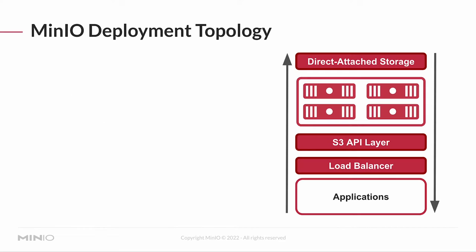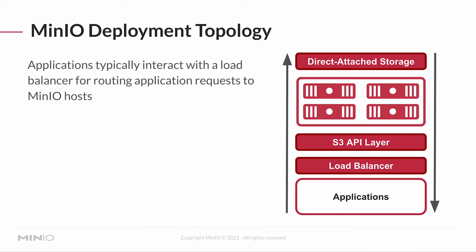MinIO deployments are going to look something like this: your application talks to a load balancer for routing requests to the MinIO hosts. This is really the best way to start off. You can have just a single MinIO for your proof of concept, but as you get ready to deploy, you want a load balancer in there with MinIO hosts behind it. You shouldn't need to change a lot of your code because the load balancer is just passing through all of the S3 API calls — you're really just changing where your application points to.